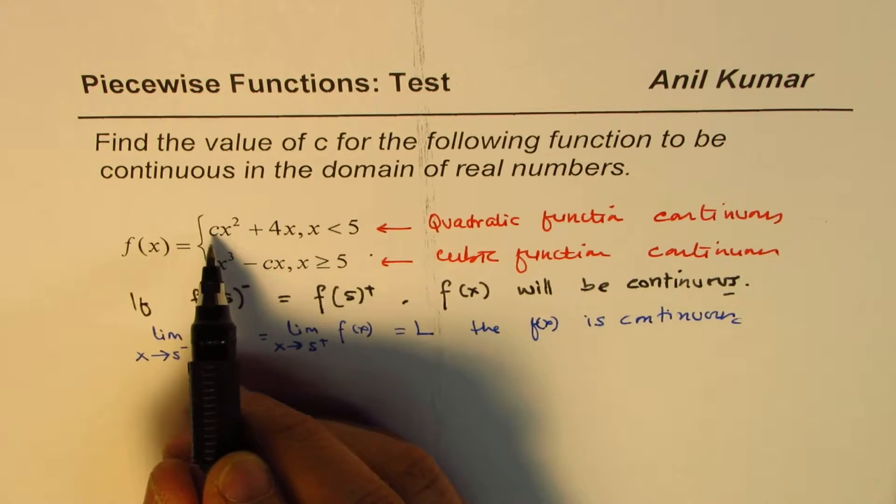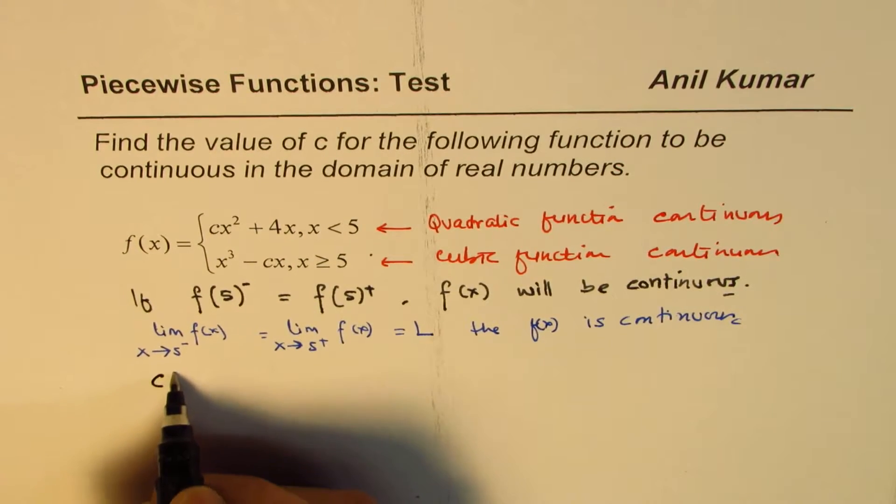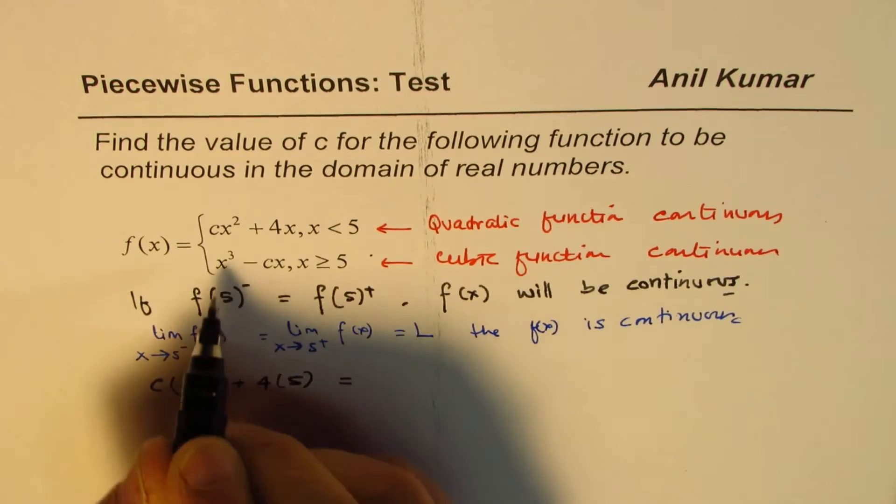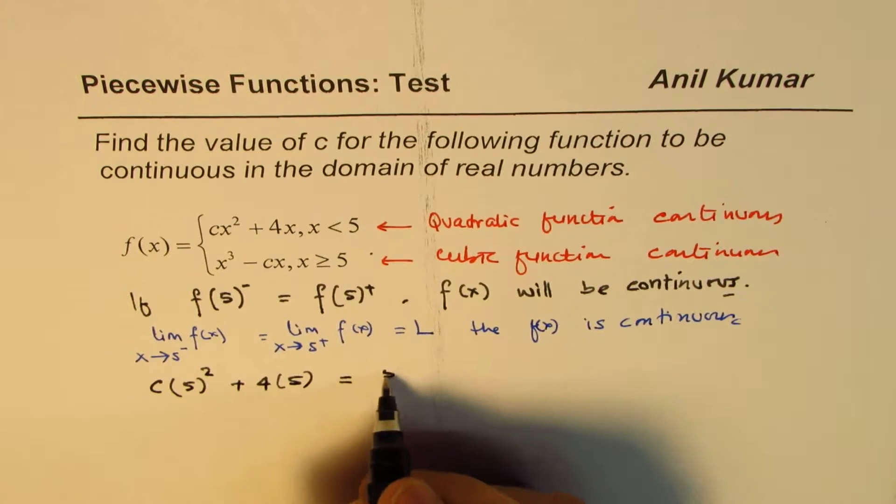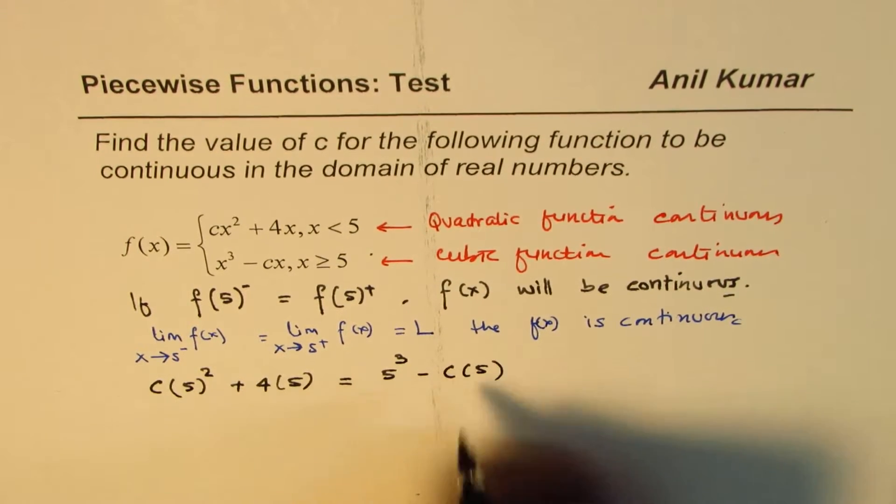Now, we want to find that value c which makes them continuous. That means c times 5 squared, if I substitute 5 here, plus 4 times 5, should be equal to, if I substitute 5 here, 5 cubed minus c times 5. Do you get the concept?